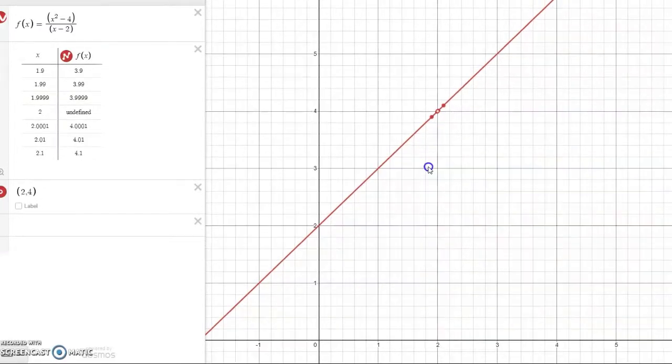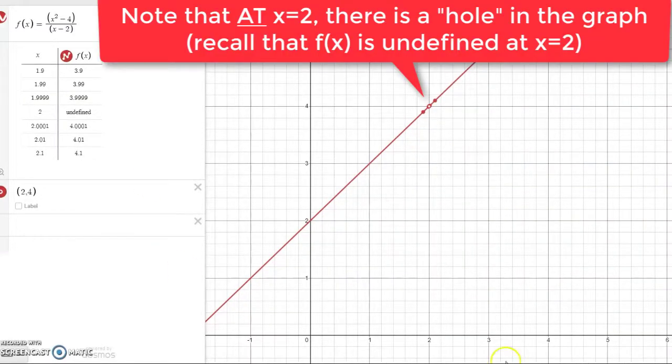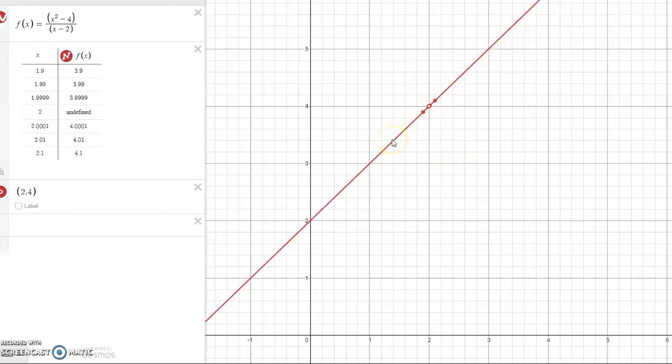So first of all, let's examine the graph. So here's a graph of the function and later you'll see why it appears to be a linear function. But for now, let's just focus on the behavior of this graph when x is nearby to 2. So if x is nearby to 2 from the left side of 2, this function seems to output values that are nearby to 4. And if x approaches 2 from the right side of 2, this function appears to output values that are nearby to 4.